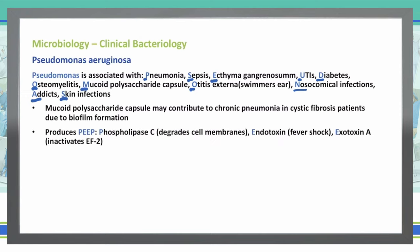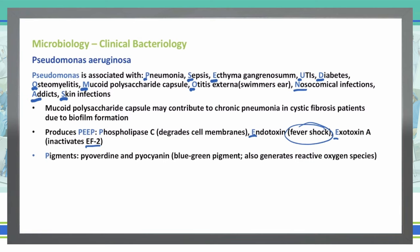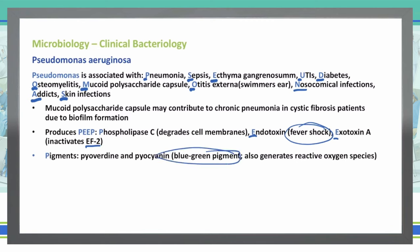Pseudomonas also produces PEEP. The P is a phospholipase C that degrades cell membranes. The first E is an endotoxin, which can give us fever and shock. The second E is exotoxin A, which specifically comes in and activates the EF2 cascade. The final P is pigments — pyoverdin and pyocyanin — which give Pseudomonas its characteristic blue-green pigment. So if a wound has a blue-green pigment and smells like grapes, this is diagnostic of Pseudomonas.